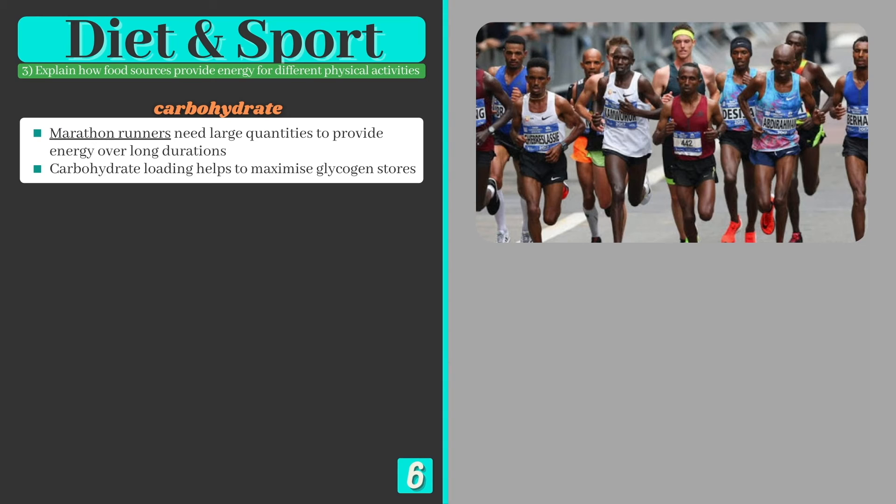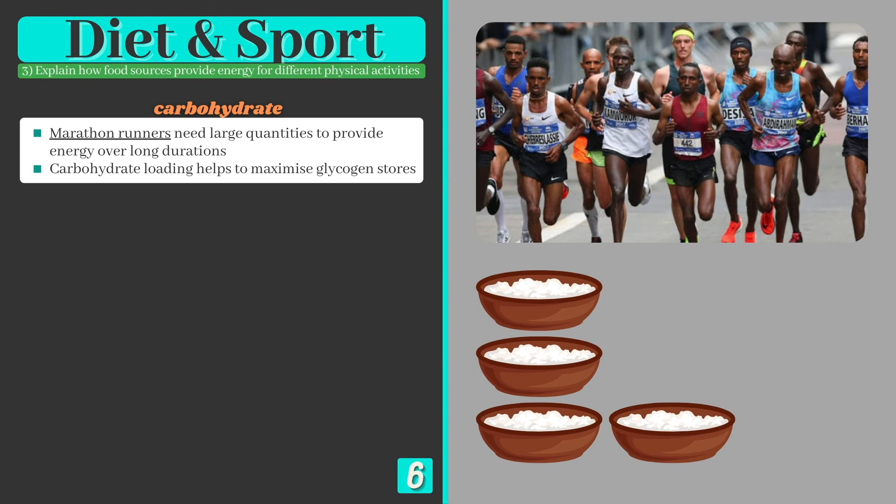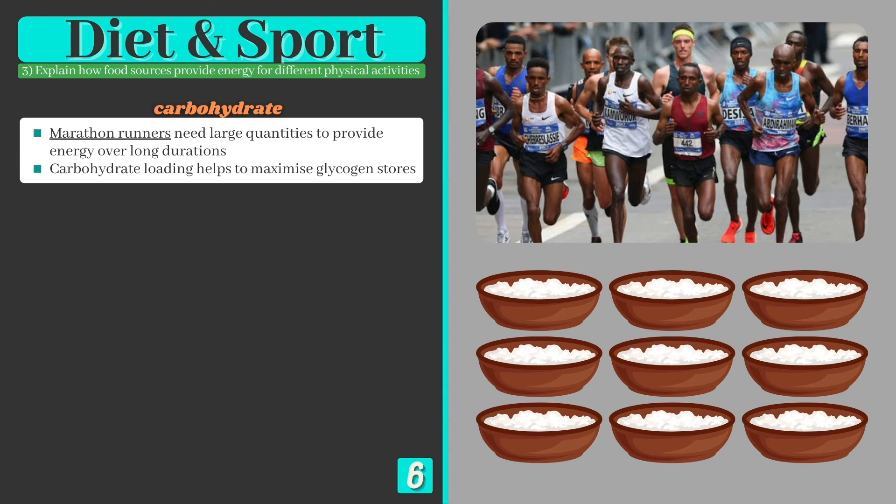Endurance athletes such as marathon runners consume large quantities of carbohydrates to provide energy over long durations. They use a strategy called carbohydrate loading whereby they increase their carbohydrate intake in the week before competition to maximize glycogen stores in the muscles.